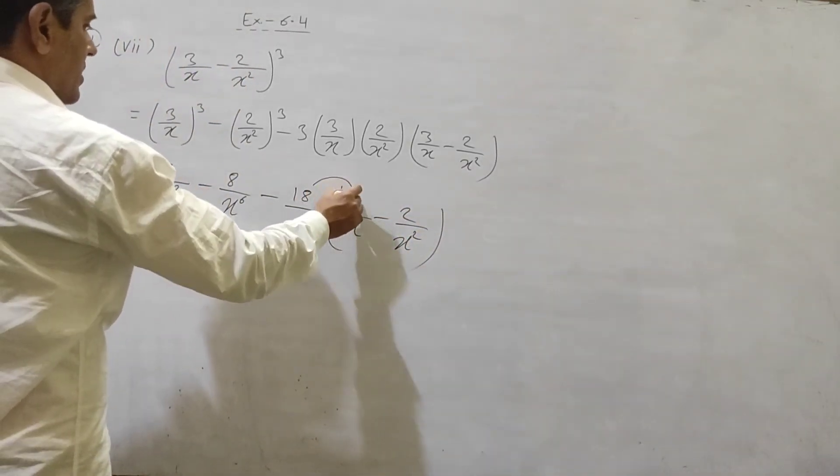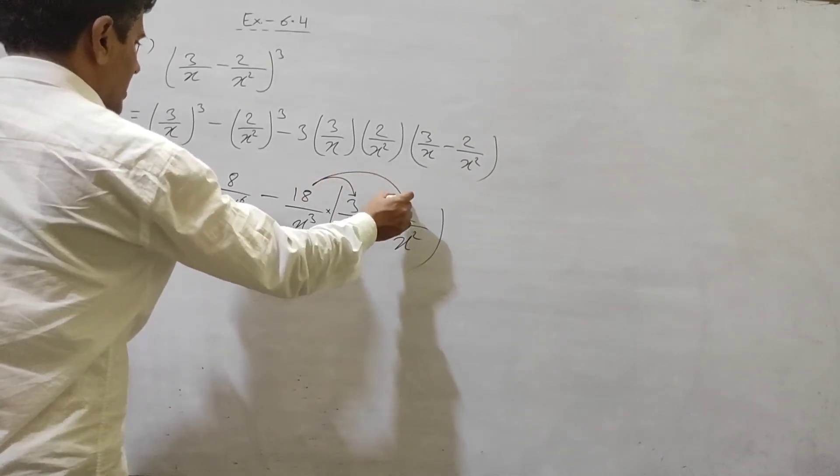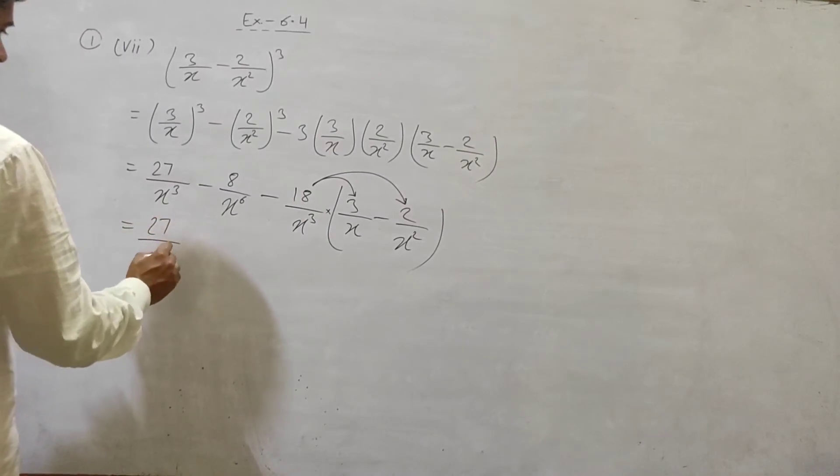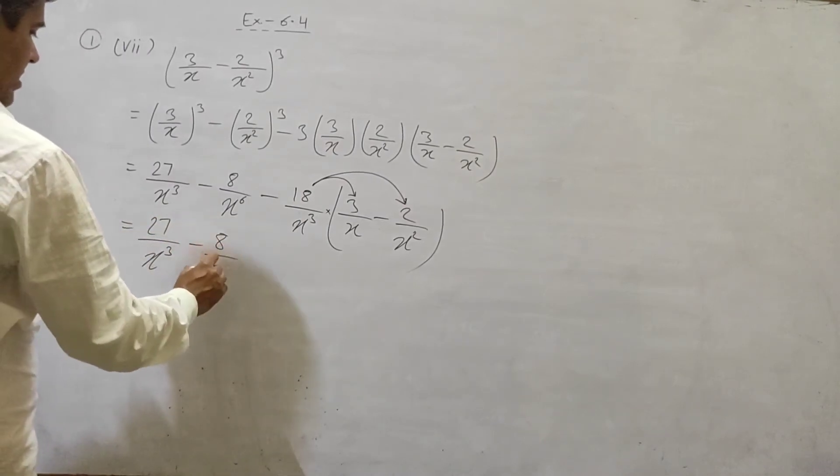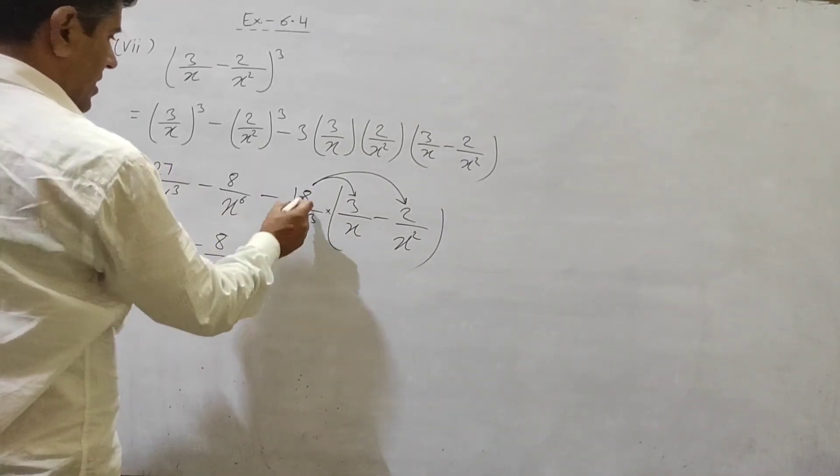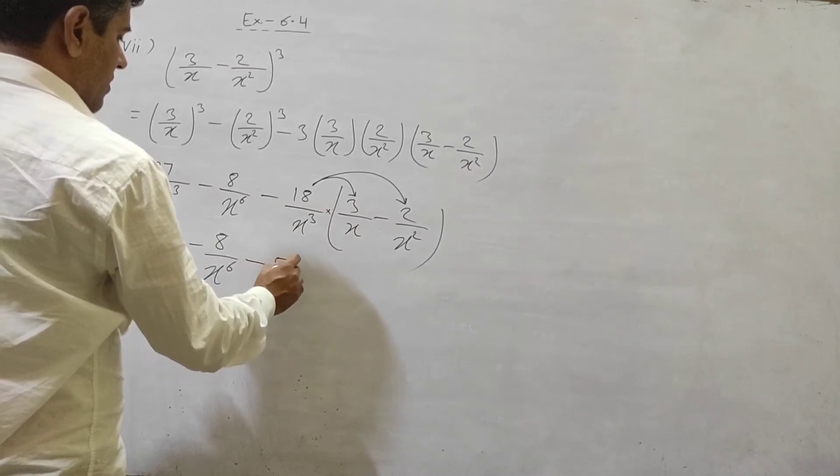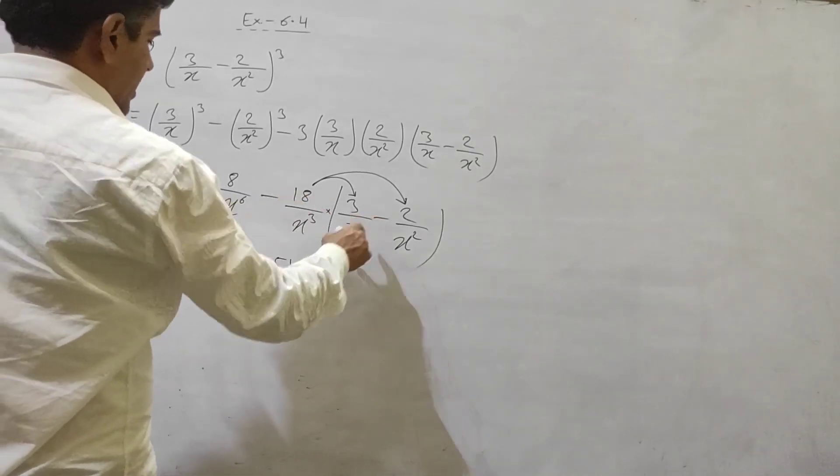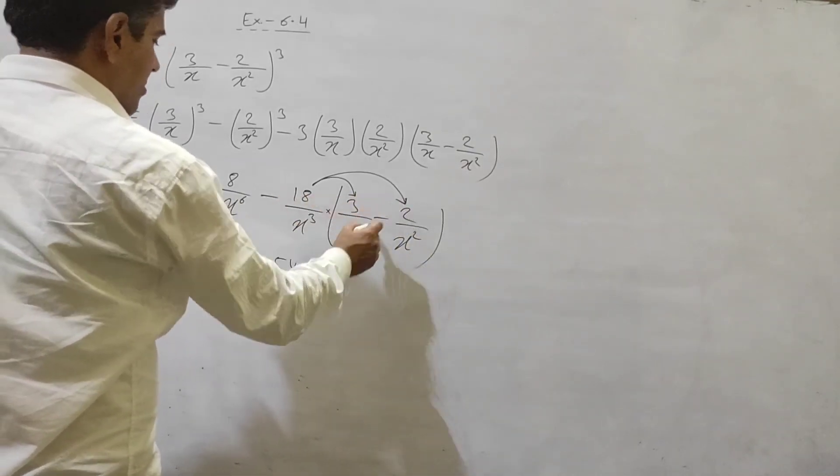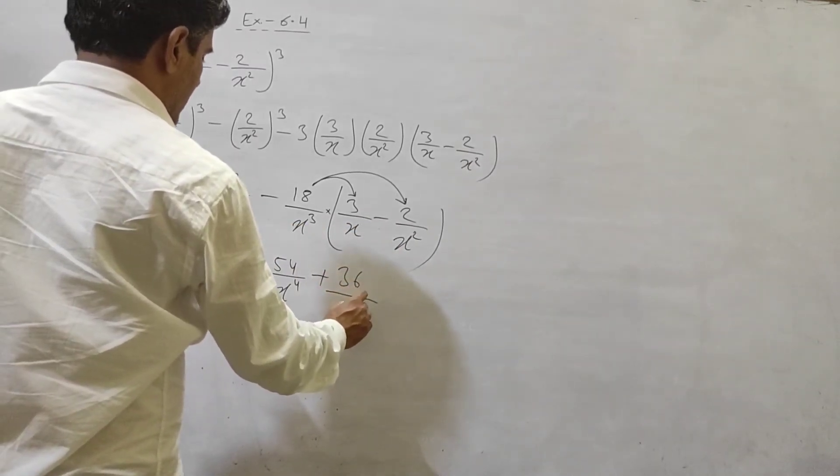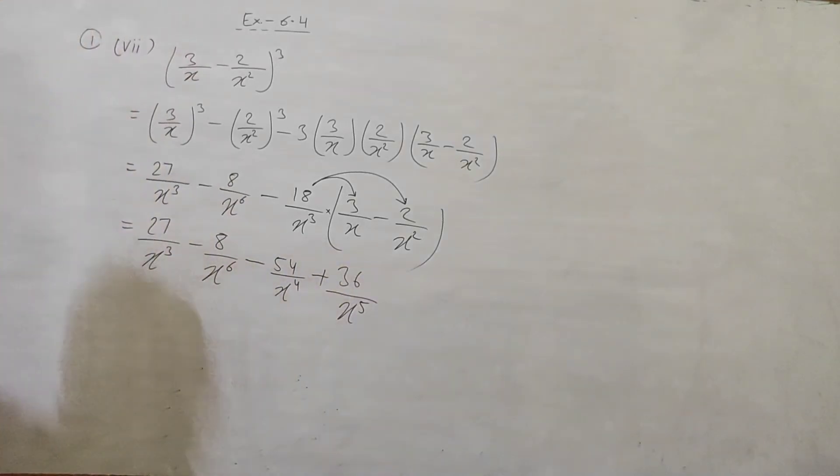3 3 2 18, x x square power add kar do 1 into 3. Isko multiply karna hai with 3 by x minus 2 by x square. First itse multiply karenge then itse karenge. 27 by x cube minus 8 by x raise to power 6. Itse multiply karein minus plus minus 18 multiply 3, 54 x cube x x raise to the power 4 minus minus plus 18 multiply to 36 x raise to the power 3 and 2 x raise to the power 5. 7th part of the question.